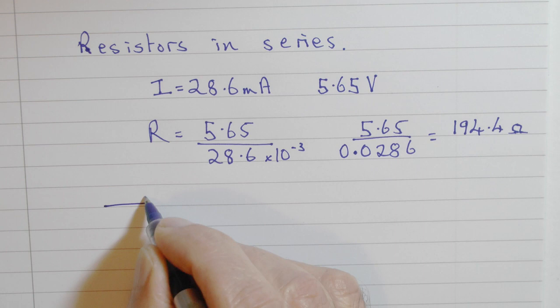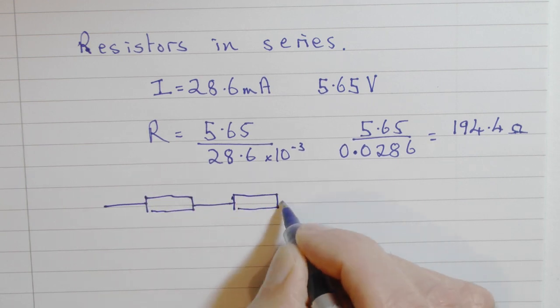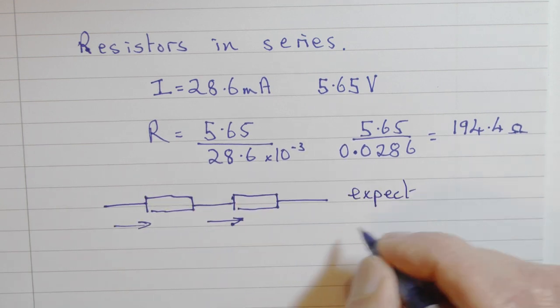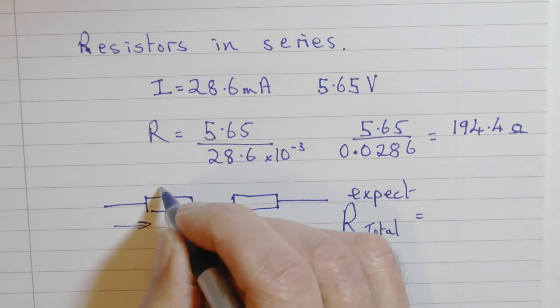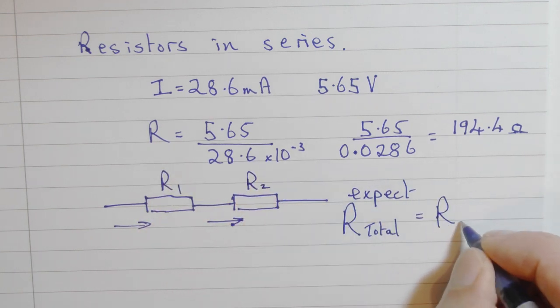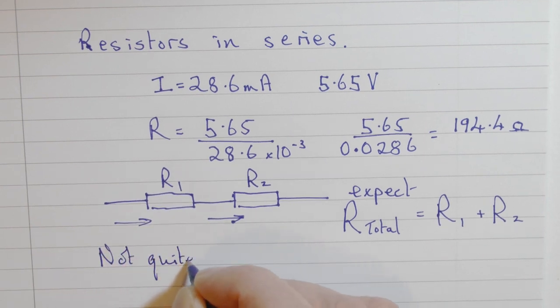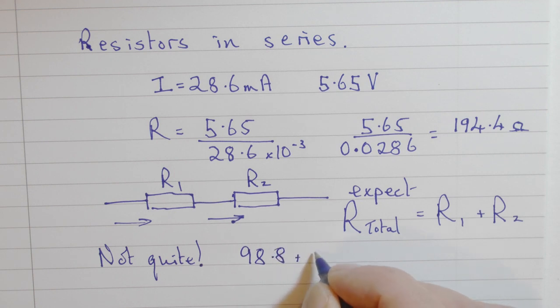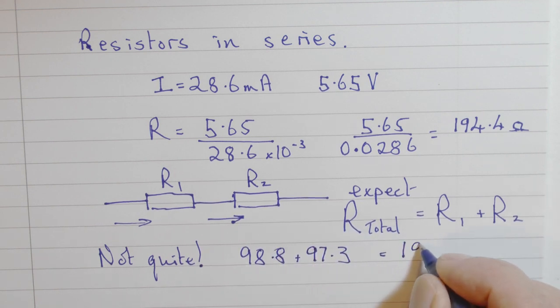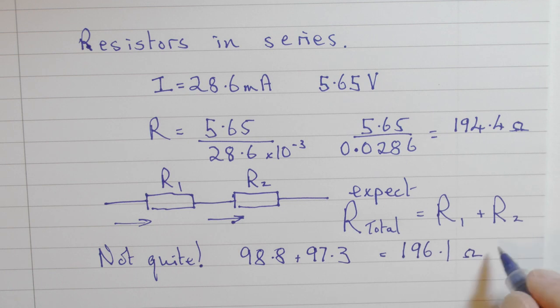Having two resistors in series, the current has to flow first of all through one and then through the other. So I would expect the total resistance to be the addition of the individuals. And in fact, that's the generally accepted equation. We haven't quite got that here. We have to admit that it's 98.8 plus 97.3, 196.1. However, considering the simple press-stud connections and the speed at which we've taken the results, this is well under 1% difference. The equation is valid.